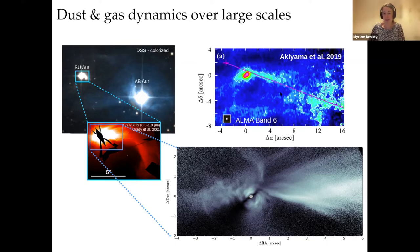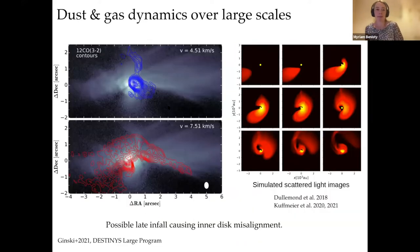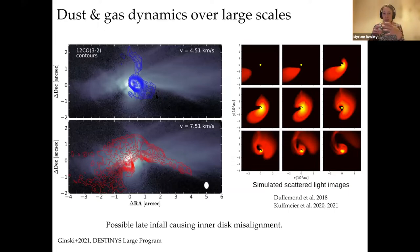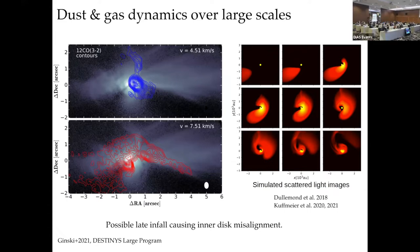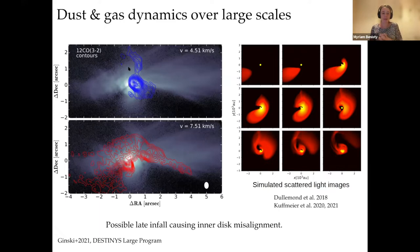What was really nice was to combine the velocity structure — looking at blue-shifted and red-shifted emission — with the scattering angle from the scattered light observation. By combining those, we could conclude that this was likely an infall of material that would cause the disk misalignment.